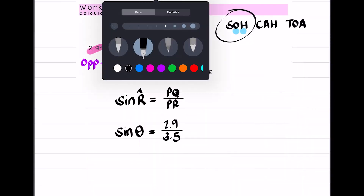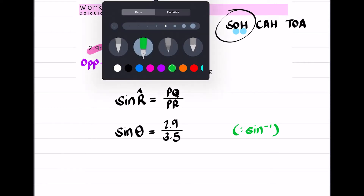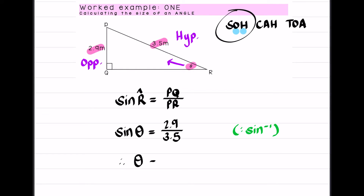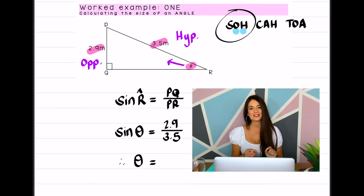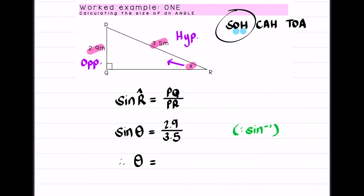Now you might think to isolate theta you'd divide by the sin, but if you divide by the sin your calculator will already tell you that you've made a mistake. We can't divide by sin — we have to second-function sin, we have to shift sin. On your calculator, push your shift button then sin, and it comes up as sin⁻¹. So therefore theta is equal to shift sin of 2.9 over 3.5, and the answer we get is 55.95 degrees.